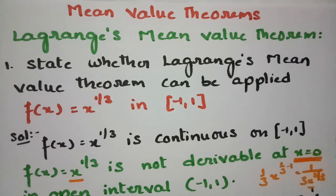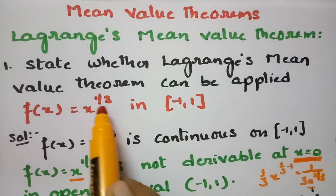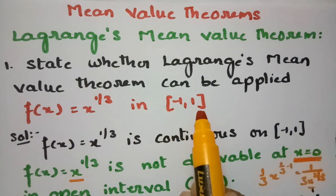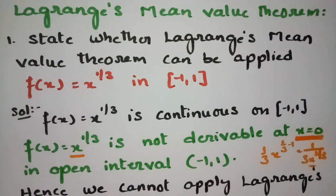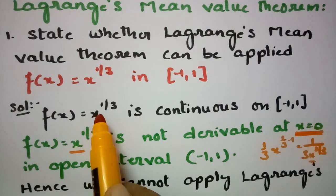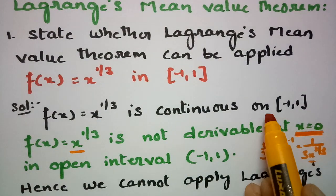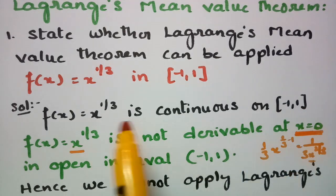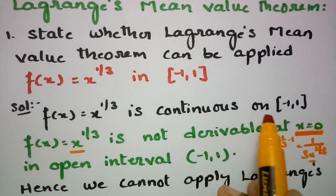State whether Lagrange's mean value theorem can be applied for the function f(x) = x^(1/3) in the closed interval [-1, 1]. In the solution, f(x) = x^(1/3) is continuous on [-1, 1], as it is an algebraic function and is continuous everywhere.